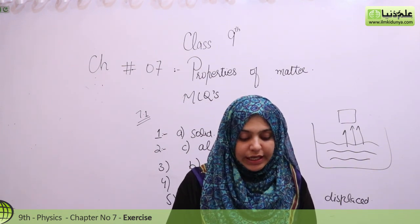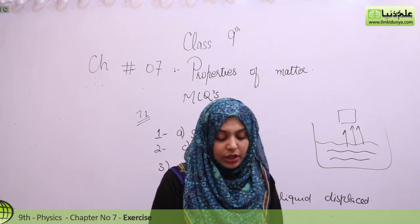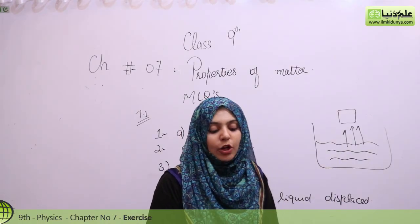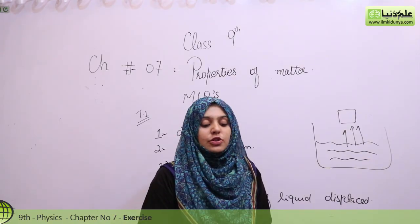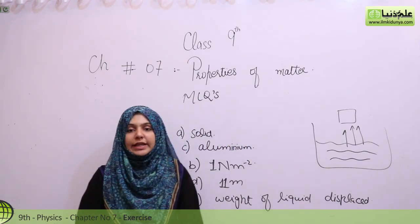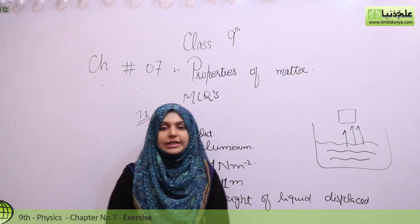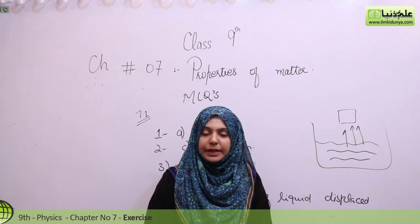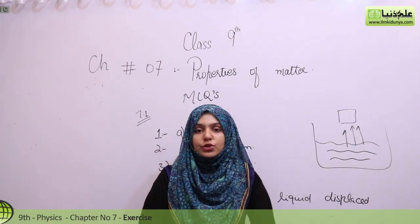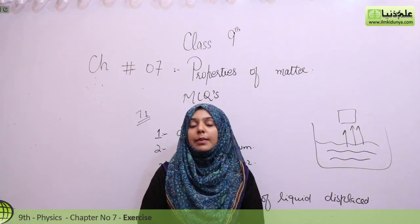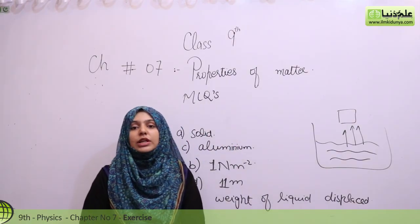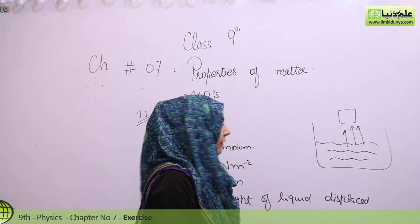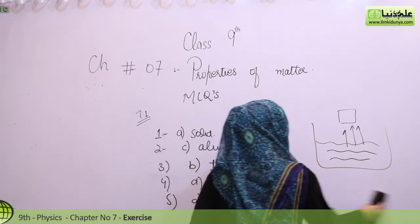Number 6: The density of a substance can be found with the help of which law? Option A is Pascal's law, Option B is Hooke's law, Option C is Archimedes' principle, and Option D is the principle of flotation. The density of a substance can be determined using Archimedes' principle, so Option C is the right answer.